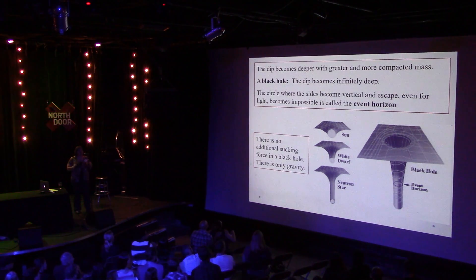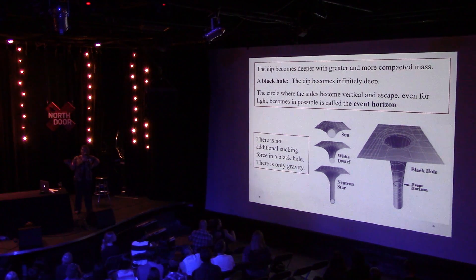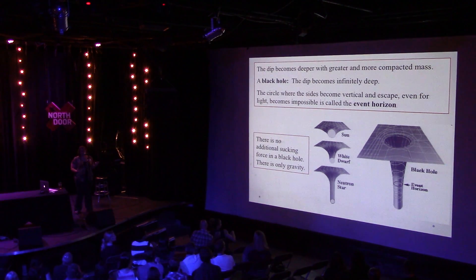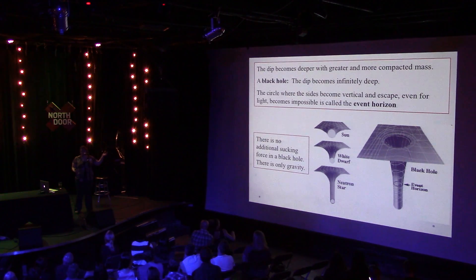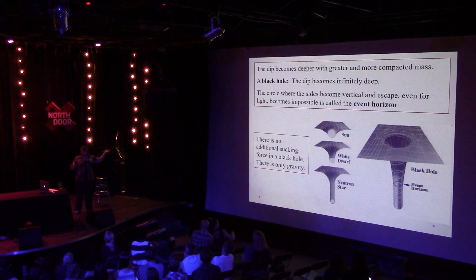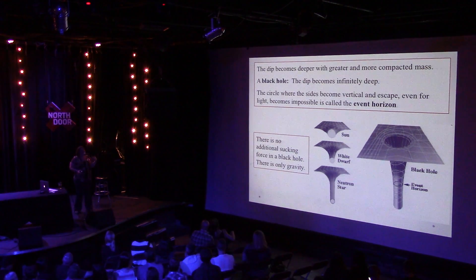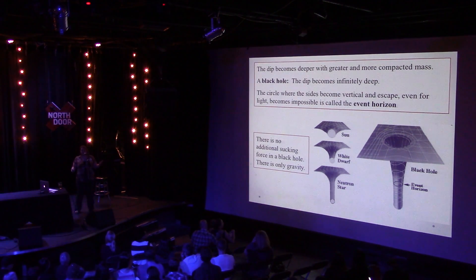Black holes don't suck — that's the title. There is no additional sucking force pulling you in; it's just gravity. A black hole with the mass of the Sun would act not much differently than our own Sun gravitationally — if you replaced the Sun with a one-solar-mass black hole, our orbit wouldn't change much. Other than there being no light in the sky, it's just gravity pulling you in, nothing else.